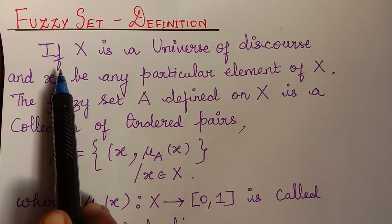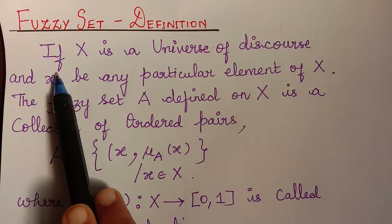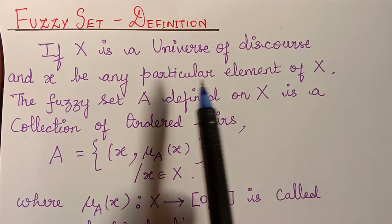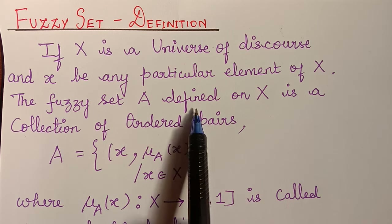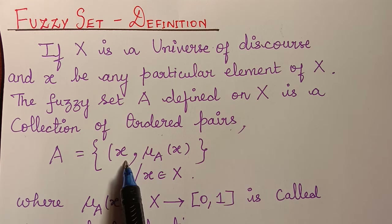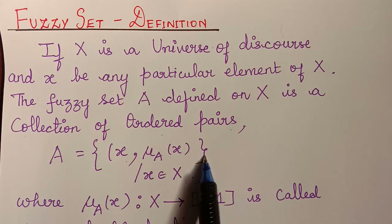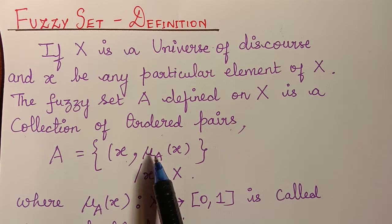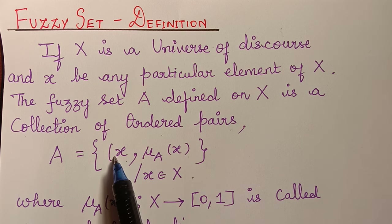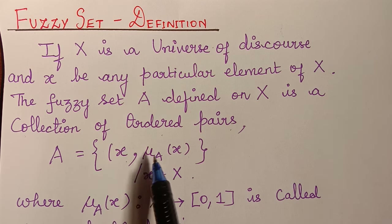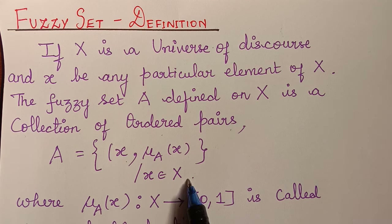Here we have the definition of a fuzzy set. If capital X is a universe of discourse and x is any particular element of X, the fuzzy set A defined on X is a collection of ordered pairs. So the set A will be equal to the ordered pair (x, μ_A(x)) for all x belonging to capital X.